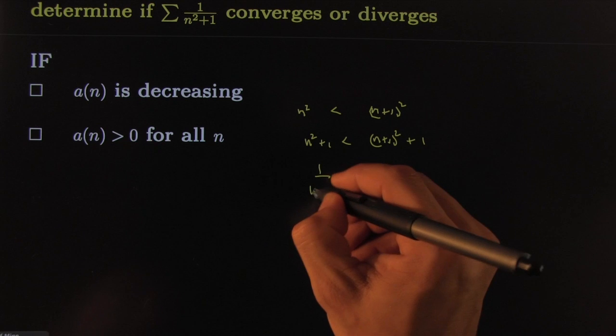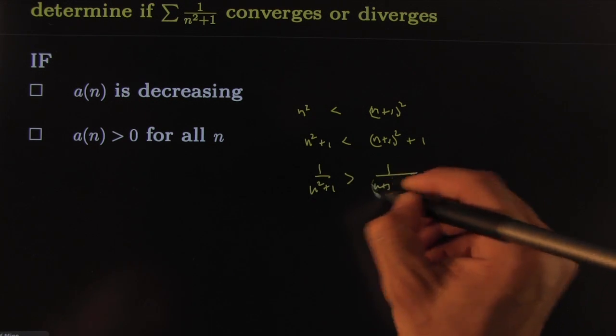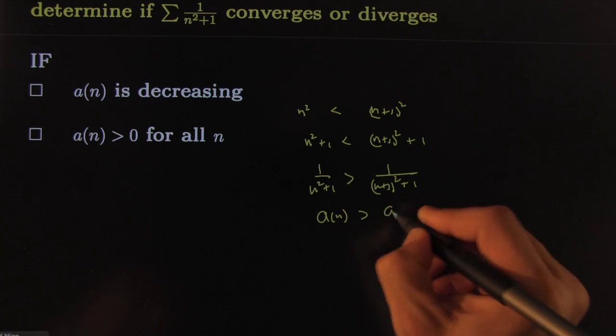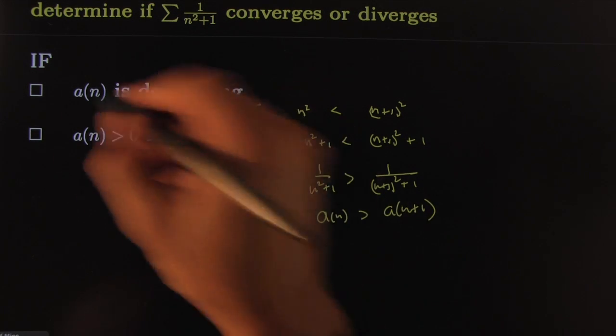Therefore, 1 over (n squared plus 1) would be greater than 1 over ((n+1) squared plus 1). This tells you that a_n is bigger than a_(n+1), which tells you that it's decreasing. Check.